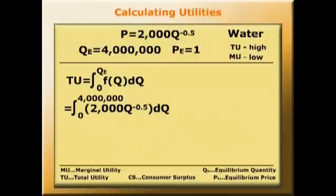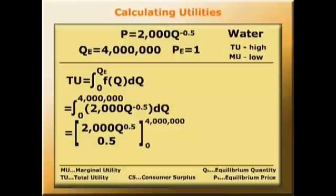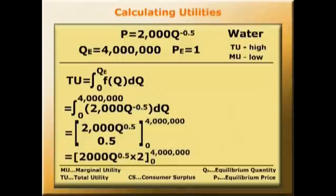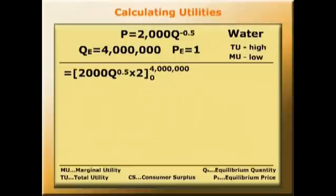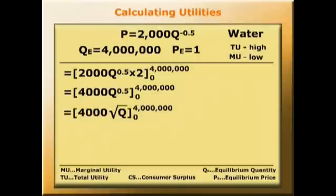Integrating this we get 2000Q to the 0.5 over 0.5 from zero up to four million, which equals 2000 times Q to the 0.5 times 2 from zero to four million, which equals 4000 times the square root of Q from zero to four million.